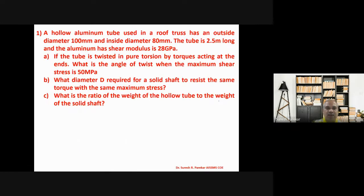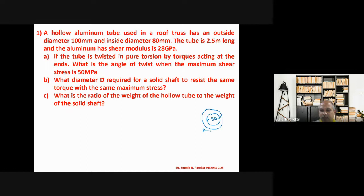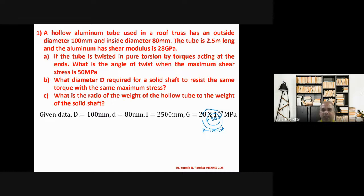The first problem: a hollow aluminium tube used in a roof truss has an outside diameter of 100 mm and inside diameter of 80 mm. The tube length L is 2.5 meters and the aluminium shear modulus G is 28 MPa. For the hollow tube, the polar moment of inertia J equals π/32 × (D⁴ − d⁴), which gives J = 5.8 × 10⁶ mm⁴.